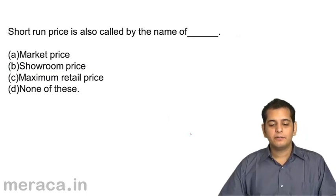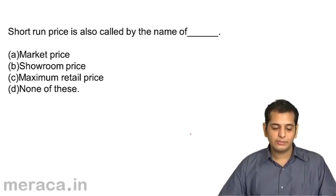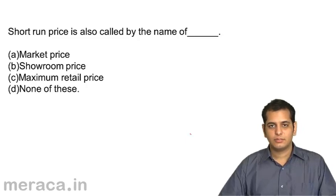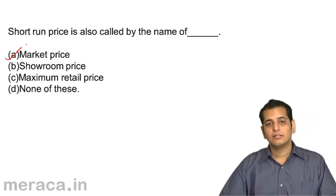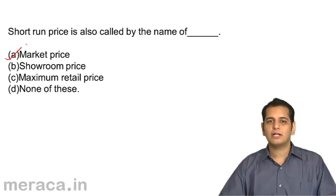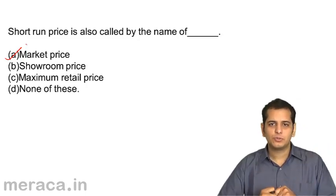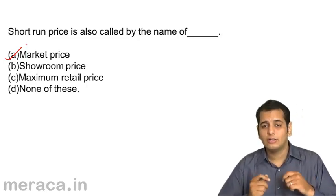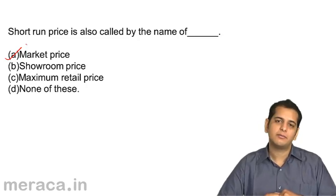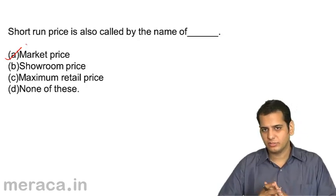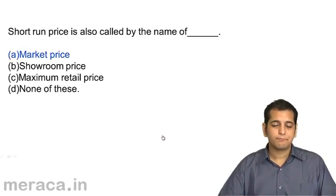Final question: short-run price is also called — A: market price, B: showroom price, C: maximum retail price, D: none of these. In the short run, the price prevalent in the market becomes the price, because it takes time for price to adjust itself. In the short run, it cannot quickly adjust itself. So whatever price is offered in the market becomes the price — that is the market price. The answer is A.